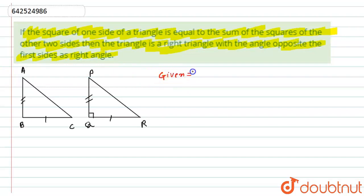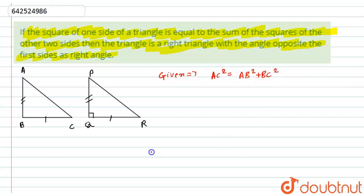What is given to us: triangle ABC is a right angle triangle, and in that triangle, AC squared is equal to AB squared plus BC squared. What we have to prove: angle B is equal to 90 degrees.